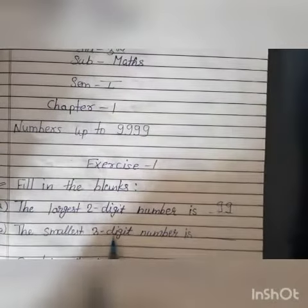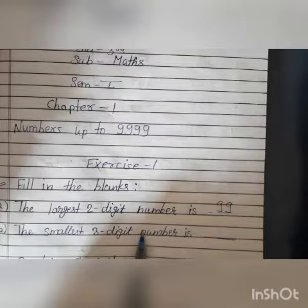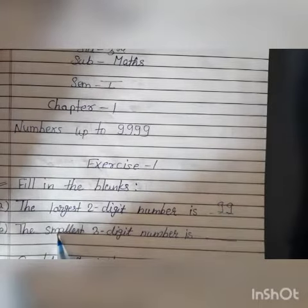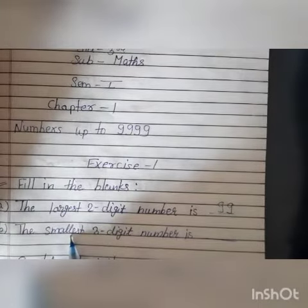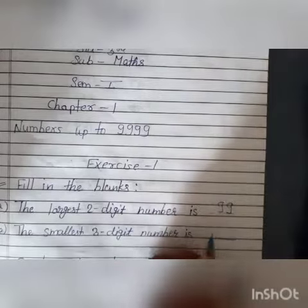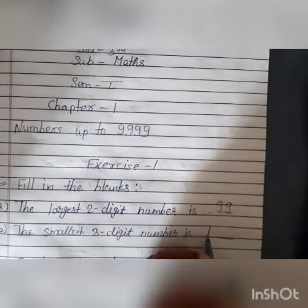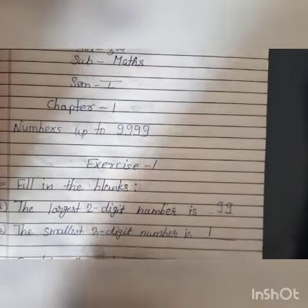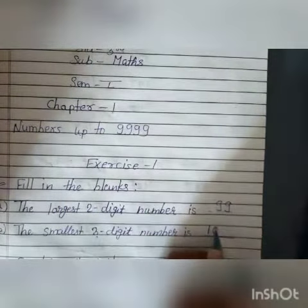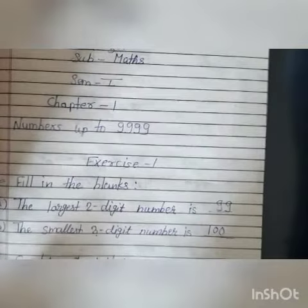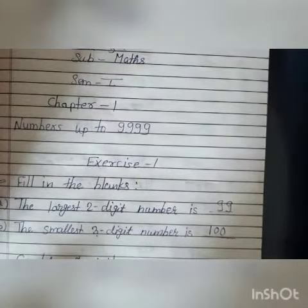Ab hai: the smallest 3-digit number. Whenever we are saying about the smallest number, that means it is 1 and then 3 minus 1, yani ki 2 zeros — so it is 100. It is the smallest 3-digit number.